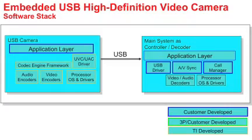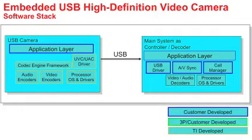The embedded communications kit provides source code for the host application running on Windows and Linux OSes, as well as the source code for the application and driver stacks running on the camera. As you can see from this software stack diagram, when configured as a USB H.264 compression camera, high definition video encoding can easily be added to any system that has a USB peripheral.